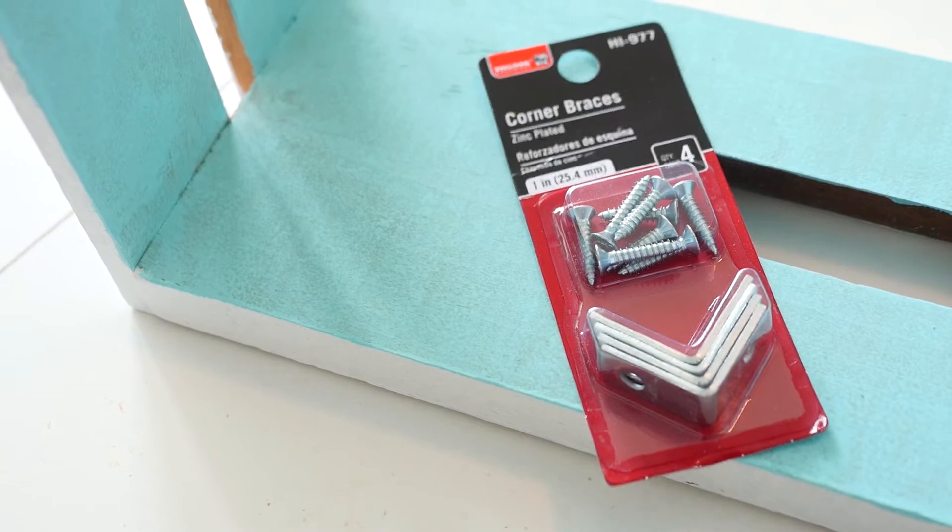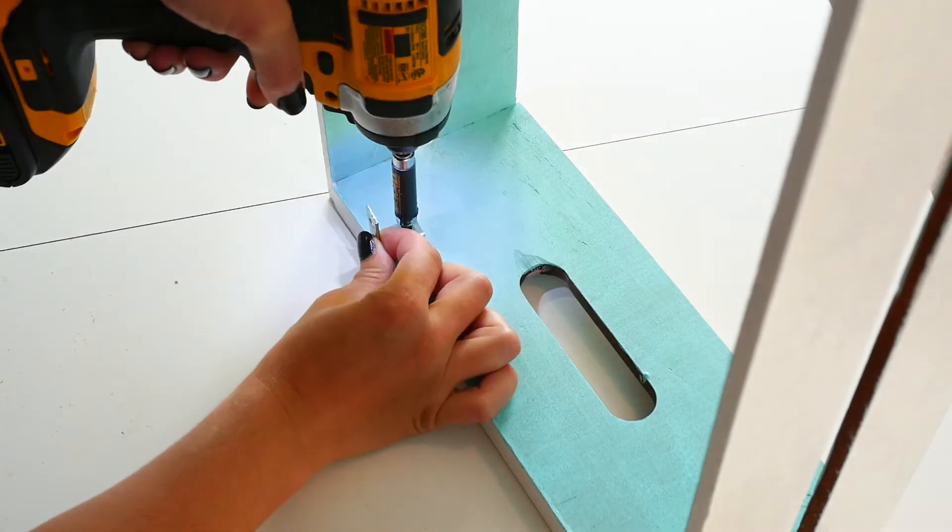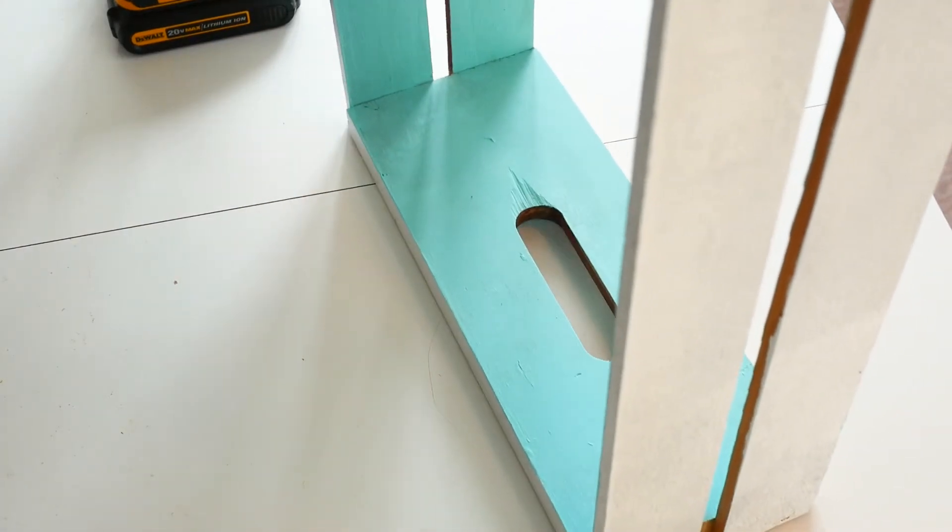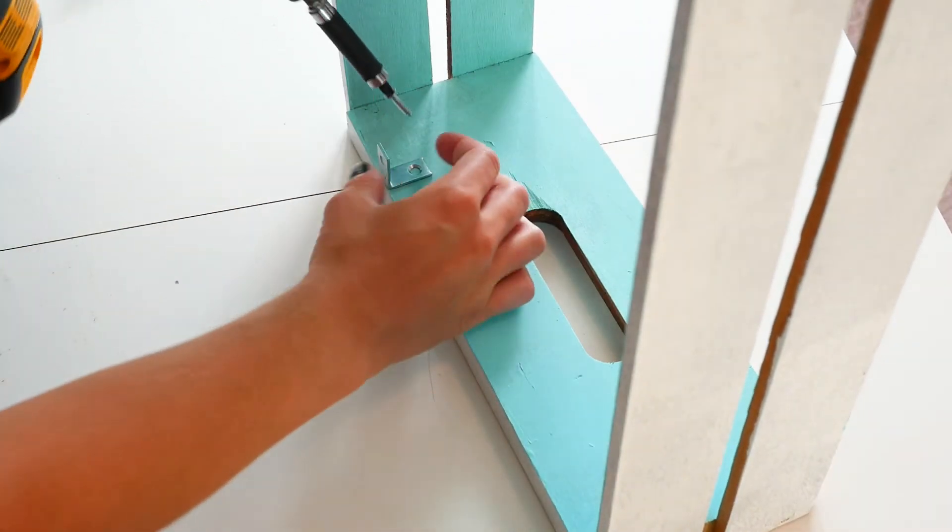Using corner braces, start by securing one side to the frame. Next, add the second brace to the other side.